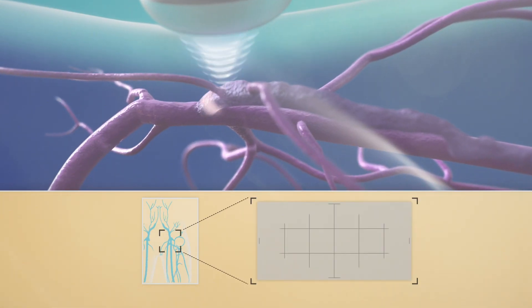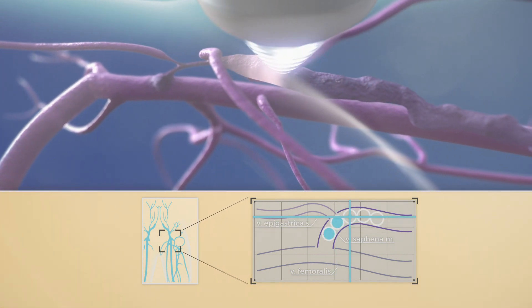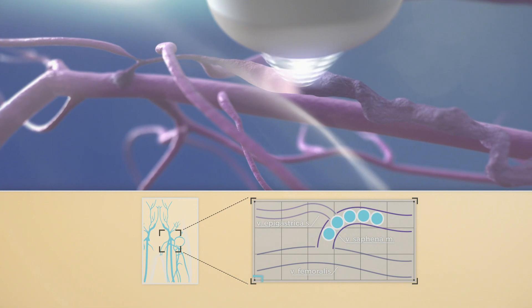Echotherapy can be safely applied as close as 2 mm from the saphenous femoral junction, literally eliminating the risk of stump formation after treatment.